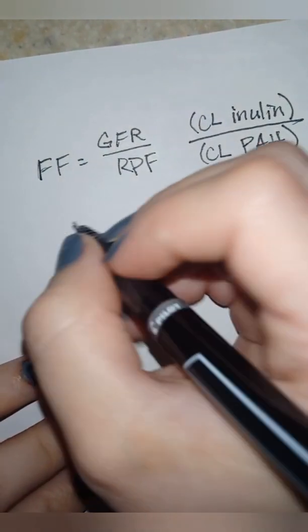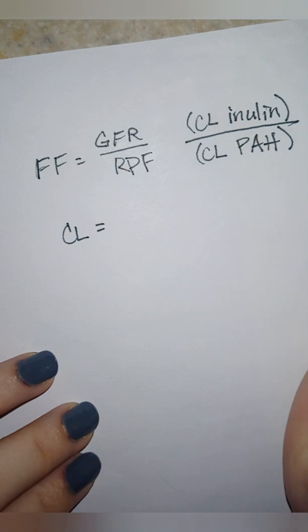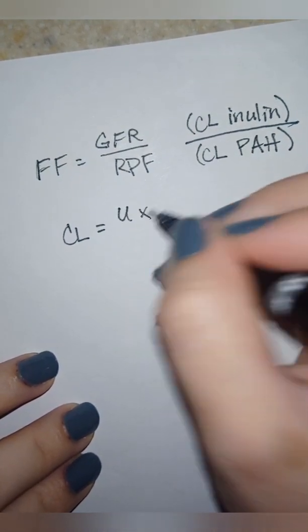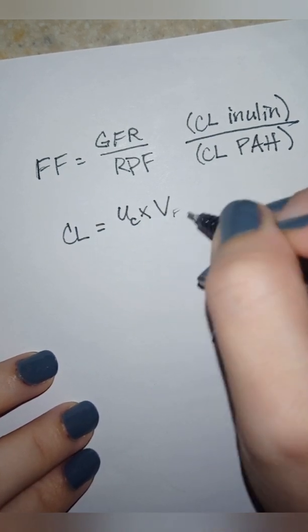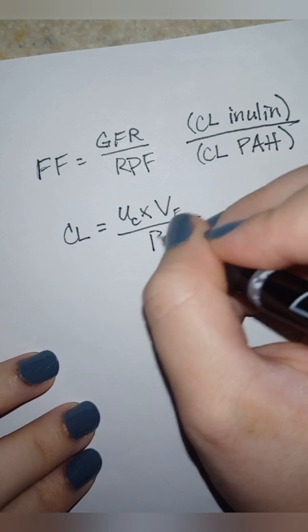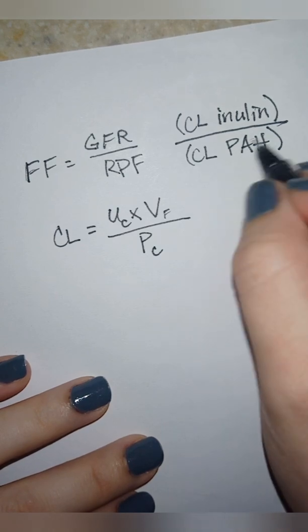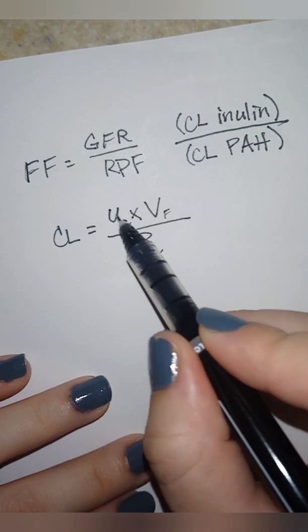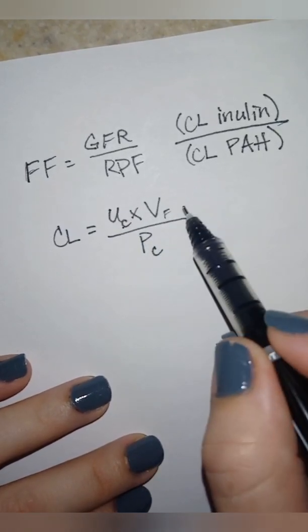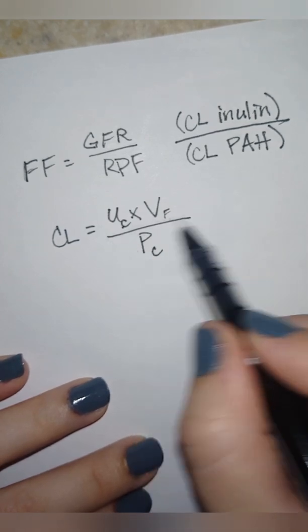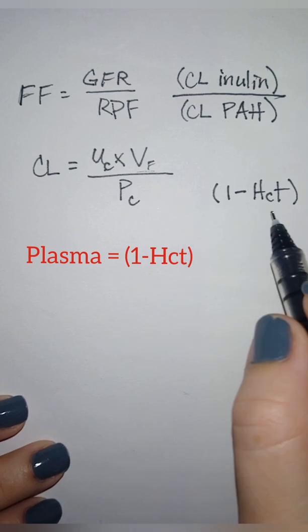If they don't give you the clearance, you've got to know that clearance is basically going to be the concentration of, for example, PAH times the flow of the urine, and that's going to be over the plasma concentration of what you're looking for. So if I'm looking for PAH, I'm just going to plug in the values which they should give you. You're going to put the urinary concentration of PAH, the flow of the urine, and divide it over the plasma concentration of PAH. So that's all you need here.